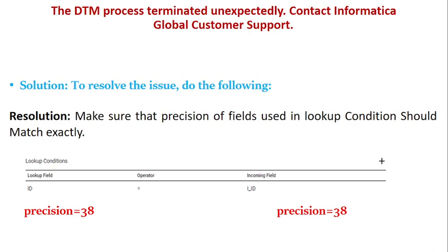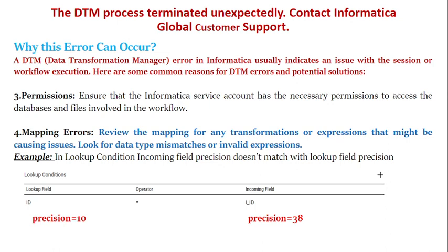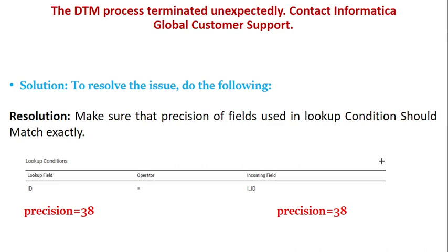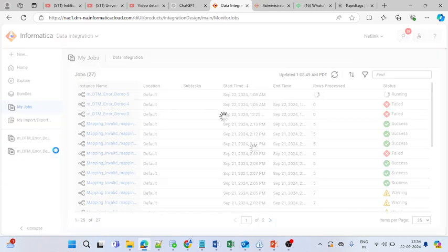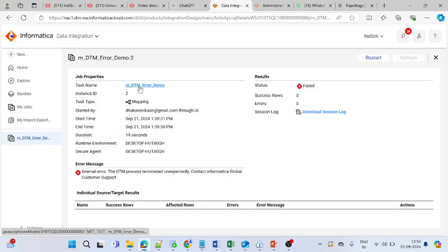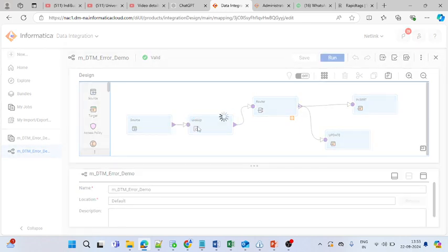The simple solution for this fourth kind of issue is to make sure the precision and data type of the fields you are using in the lookup condition match each other. If your lookup field precision is 38 and your incoming field precision is also 38, they are exactly the same and you will not get any DTM error. Now let's move towards the demonstration, where I will show you how this error generally occurs and how we can resolve it.